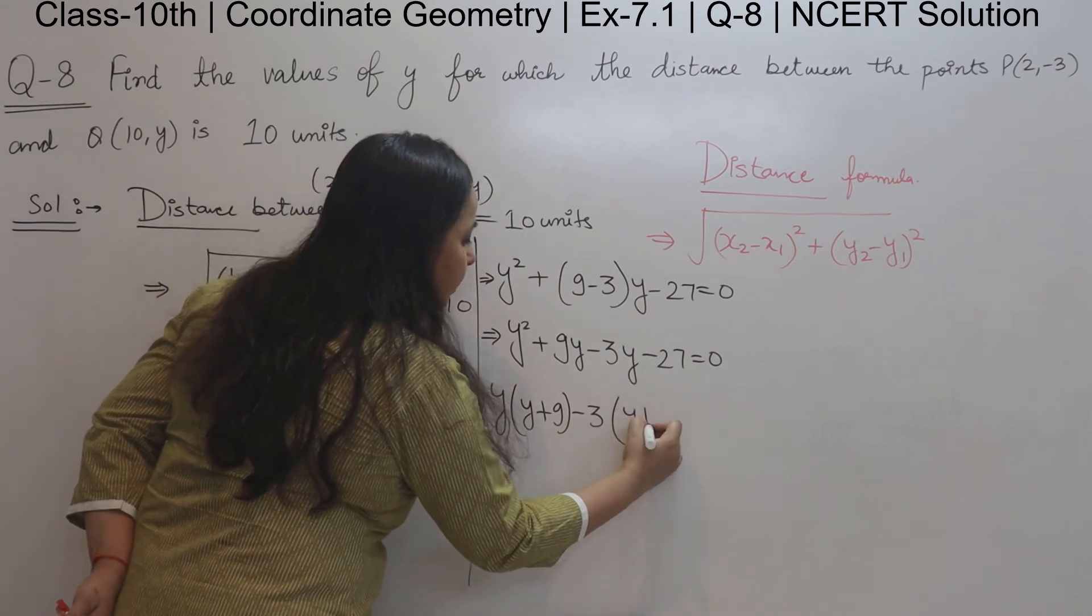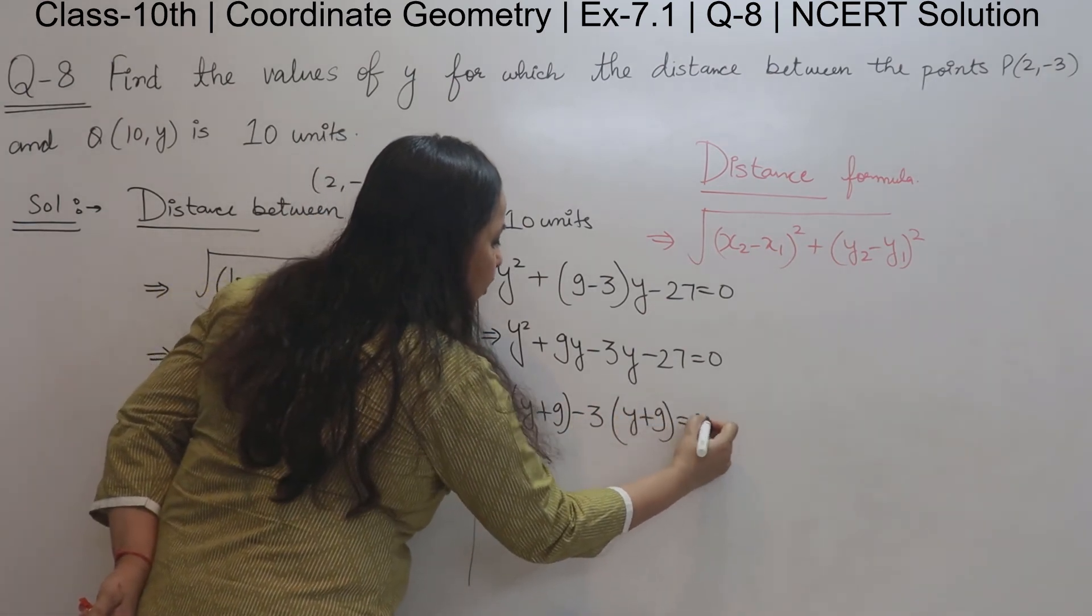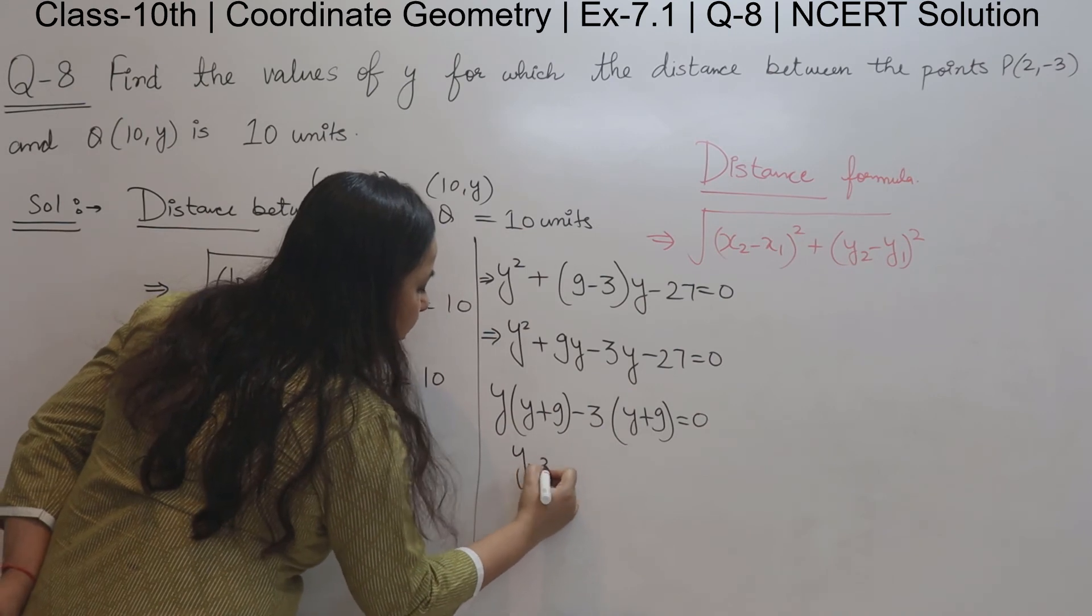Minus 3 as common, so y plus 9. So we got the two values of y here: y minus 3.